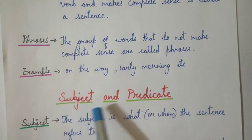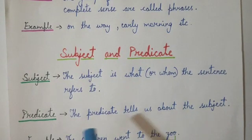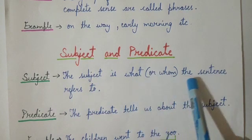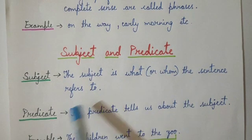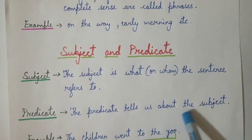The next term is subject and predicate. What is subject and predicate? The subject is what the sentence refers to. The predicate tells us about the subject.